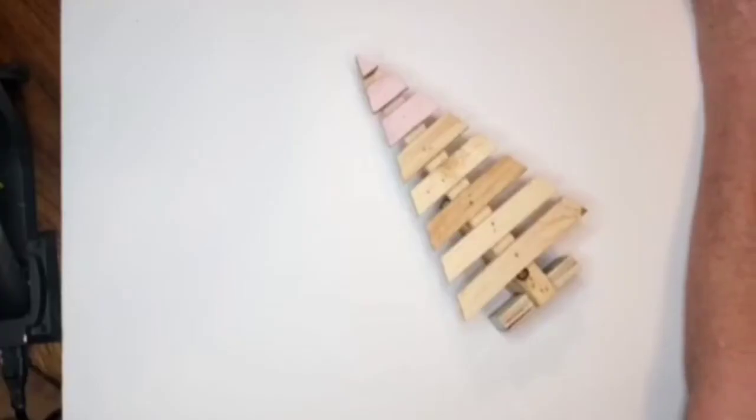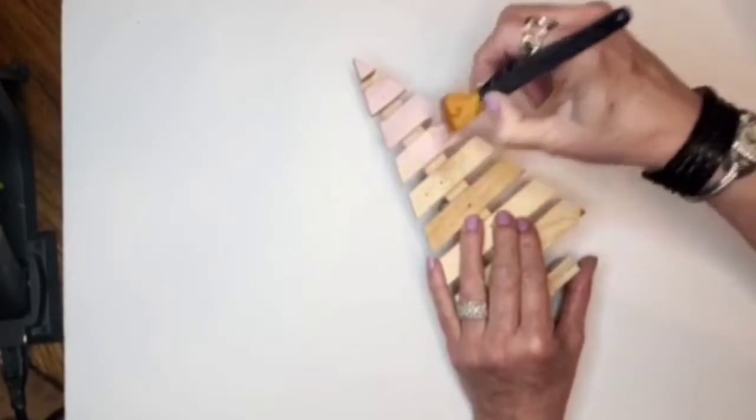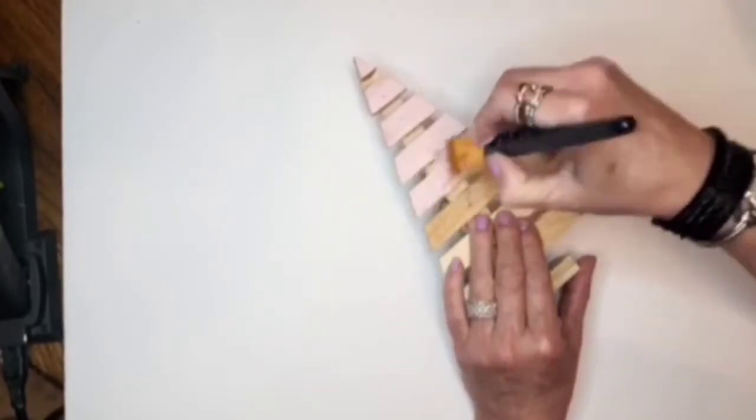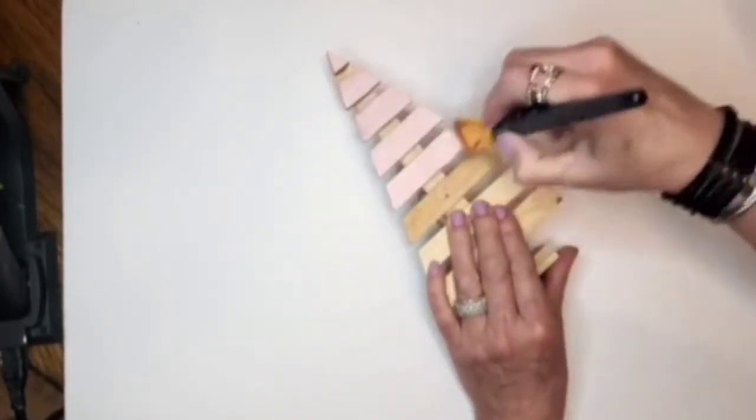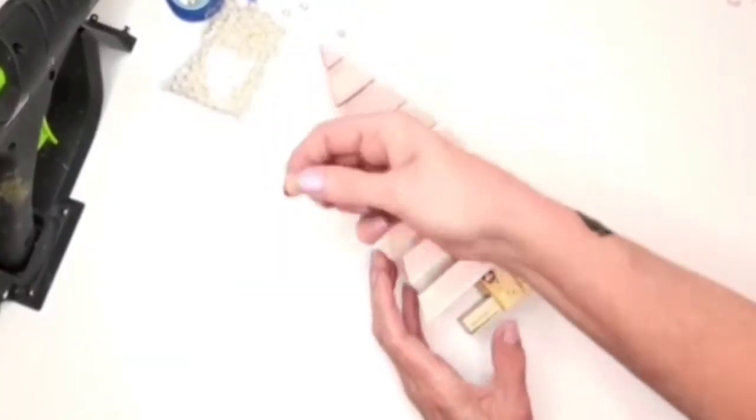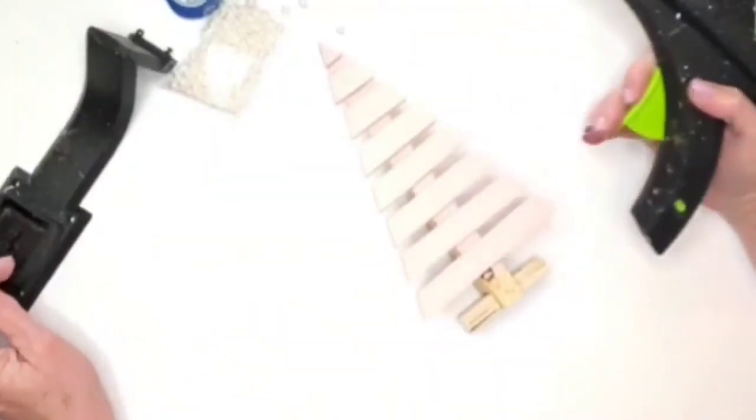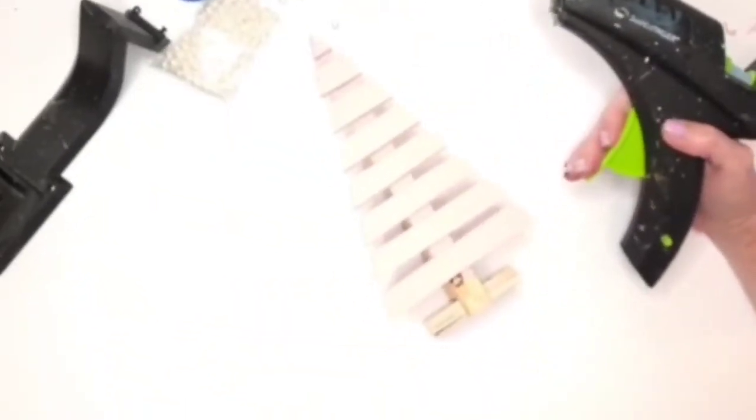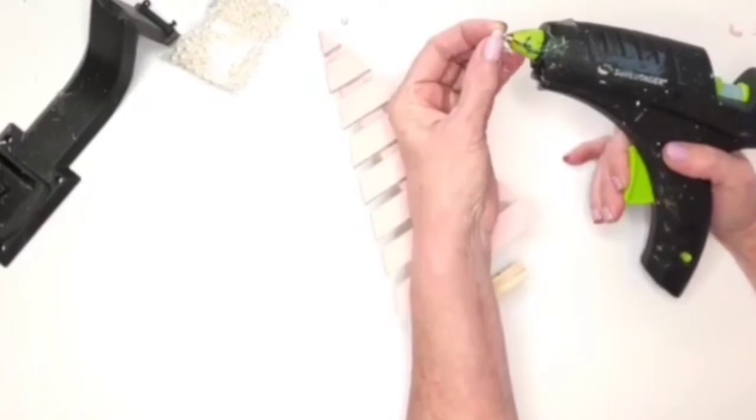DIY number one. What you see here is just a little wooden Christmas tree that my sister had given to me. I'm going in with the color ballet slipper and I'm just giving it good coverage of the pink. Now I'm going in. I got these little pearls from the dollar tree.